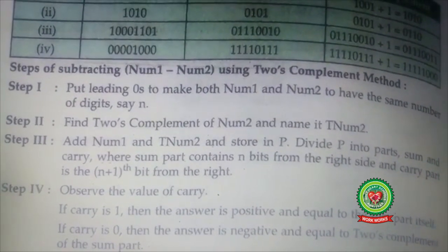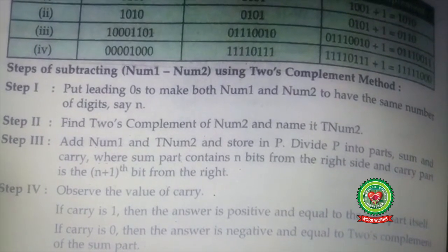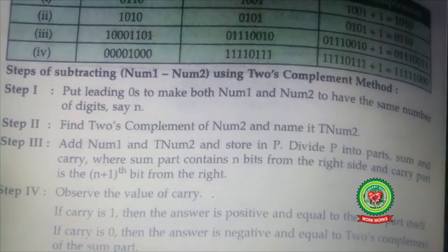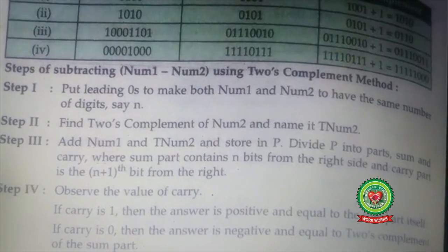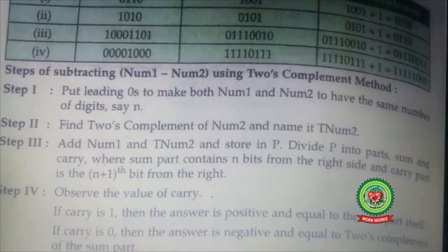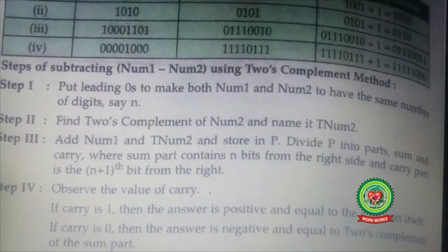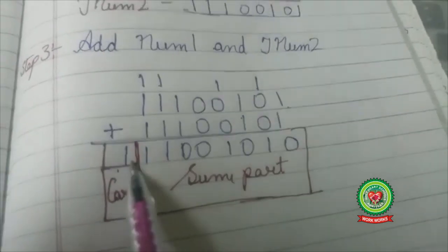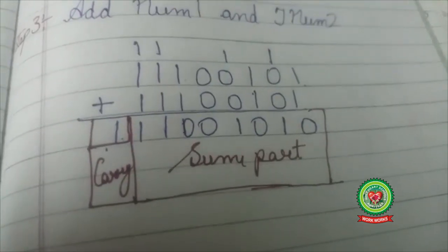Observe the value of carry. If carry is 1, then the answer is positive and equal to the sum part itself. But if carry is 0, then the answer is negative and equal to the two's complement of the sum part. So in my example, carry is 1, so this answer is positive.